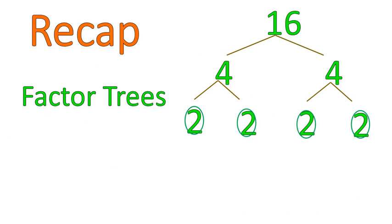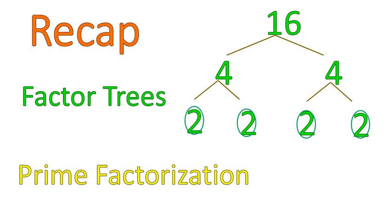So quick recap. Factor tree looks like this. Prime factorization looks like this. It's the numbers that are multiplied, the prime numbers that are multiplied together to give you your original number. Hope that lesson was helpful for you. Have a wonderful day.